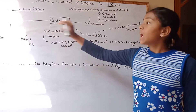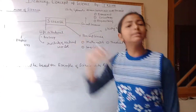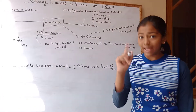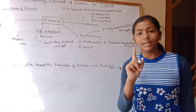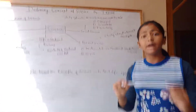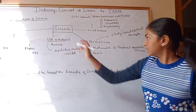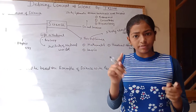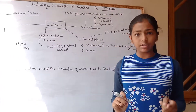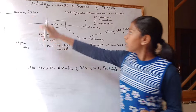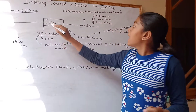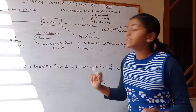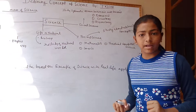Now we will learn the branches of science. Last time we learned the origin of science and what science is. Now we move to the branches of science. Science is classified into four branches.